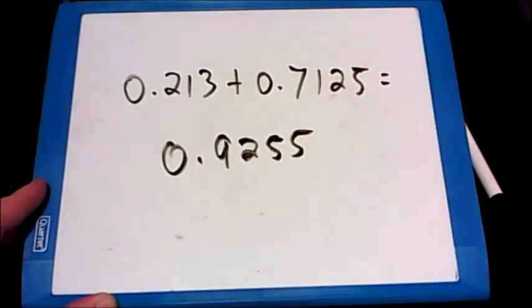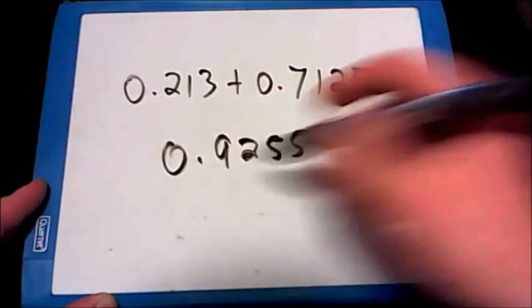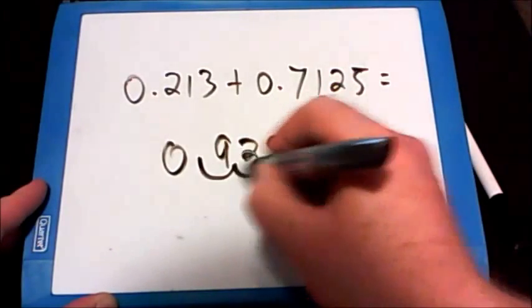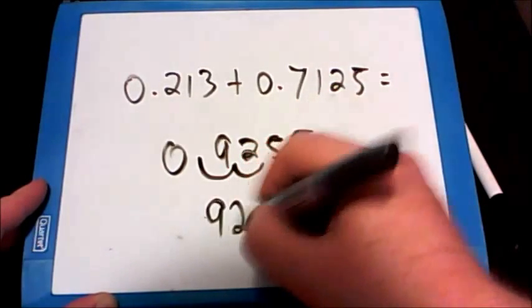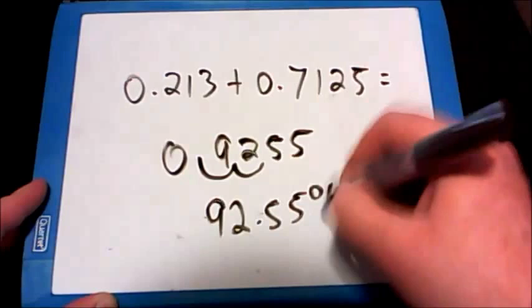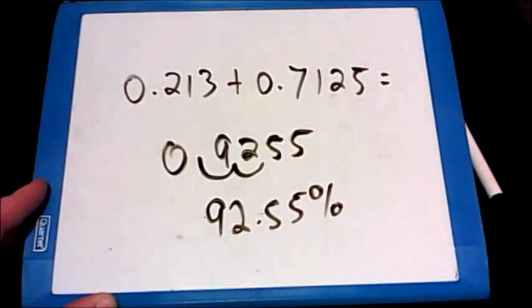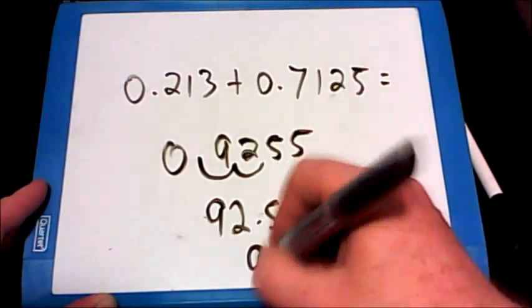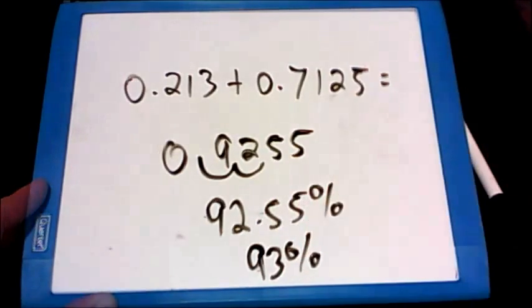We need to change that back from a decimal to a percent by moving the decimal point two places to the right, changing it to 92.55%. And don't forget that from the problem, we were asked to round this to the nearest whole percent. So 92.55% rounds up to 93% as his final grade.